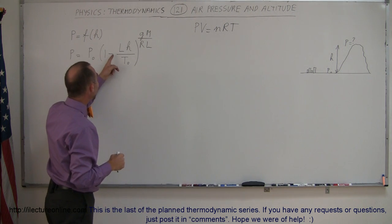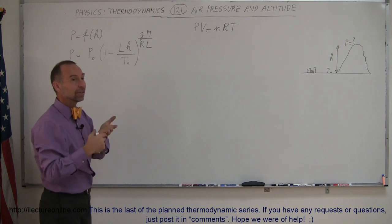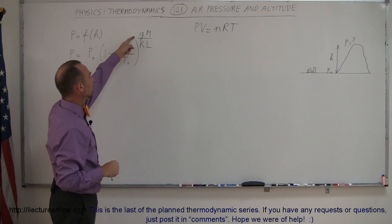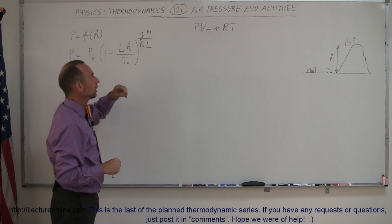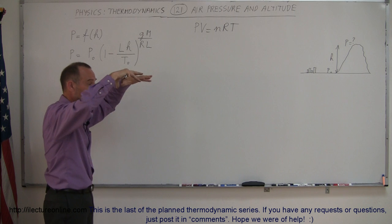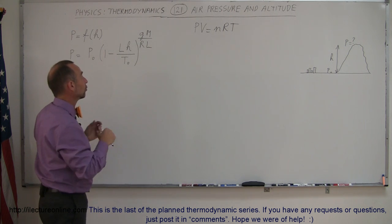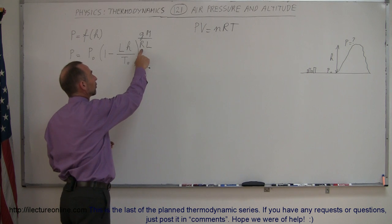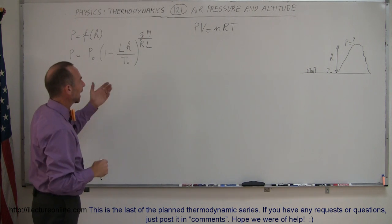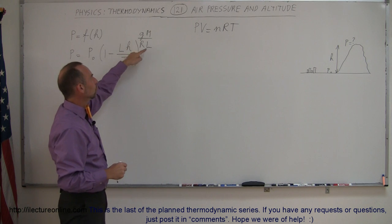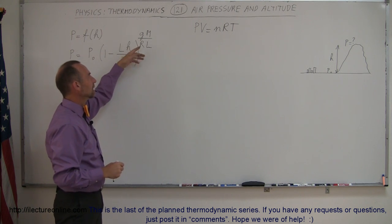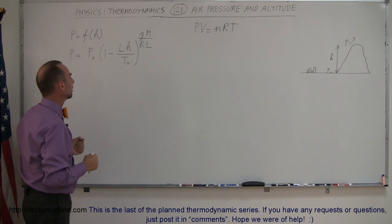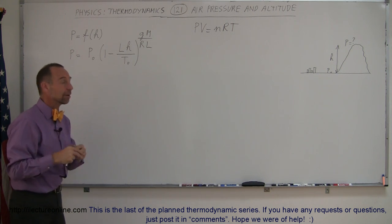So that's why we have the one minus the lapse rate, the decrease in the temperature as you go higher and higher up. G is the acceleration due to gravity because that's what causes the air pressure is the weight of the air pushing down, so G is important. M is the molar mass. R of course is our gas constant, and L is that lapse rate again. L in the denominator meaning it reduces the effect of the exponent here, again decreasing the pressure a little bit as you go higher up and the temperature drops.